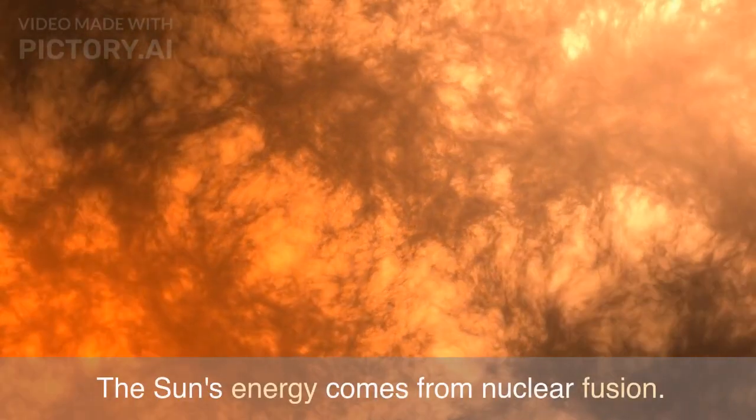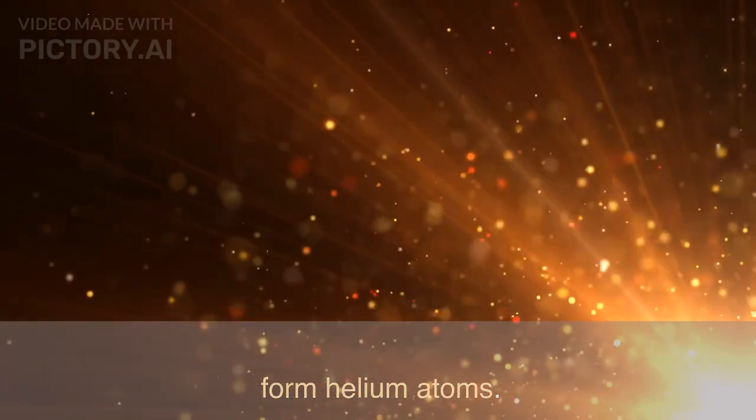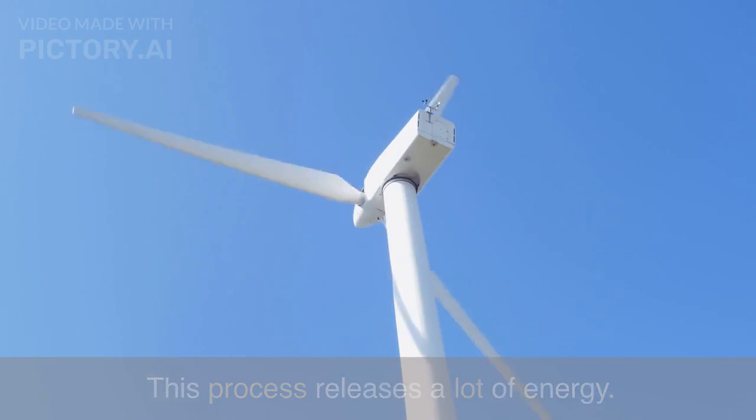The Sun's energy comes from nuclear fusion. Hydrogen atoms in the Sun's core are fused together to form helium atoms. This process releases a lot of energy.